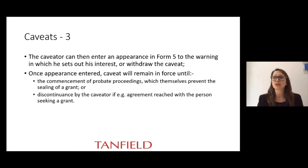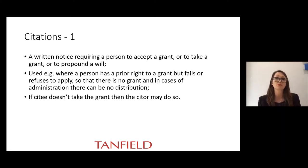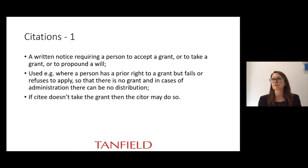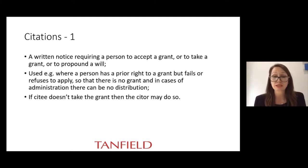A citation is a written notice requiring a person to accept a grant, to take a grant, or to propound a will. They are used, for example, where a person has a prior right to a grant but hasn't applied and so there's no grant — a stalemate situation with no distribution. If the citee doesn't take the grant, the citor may do so. A citation can also be used where a person has intermeddled in the estate but failed to take a grant. It is issued by the relevant registry on the application of the citor; the citee then enters an appearance and should apply for a grant or in some cases start proceedings.